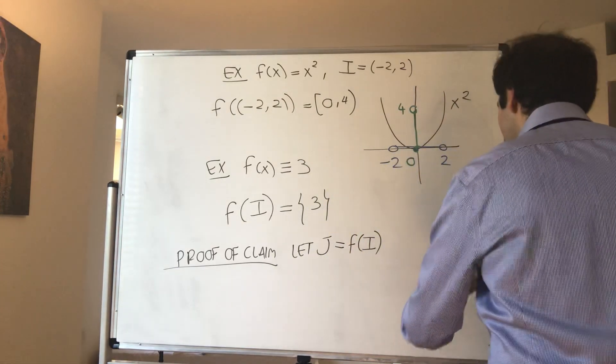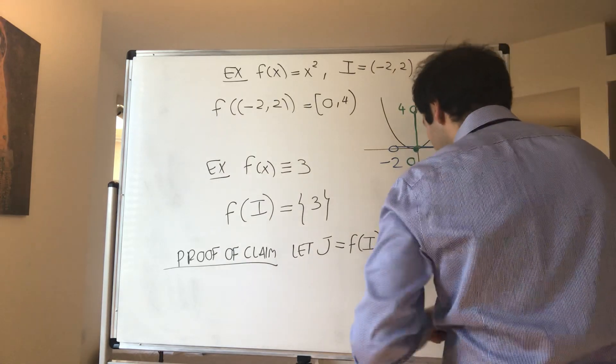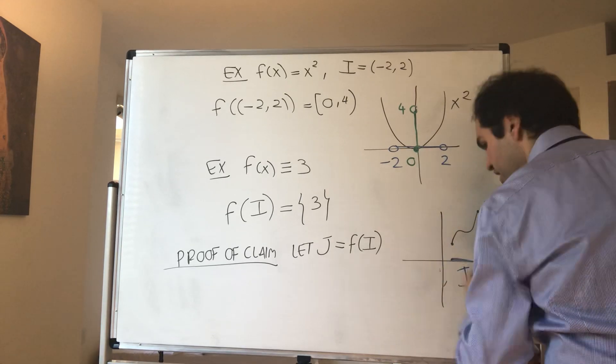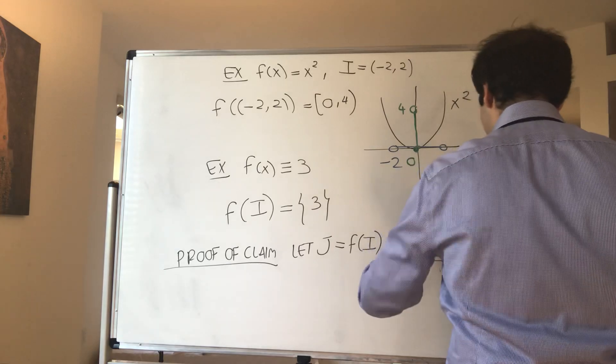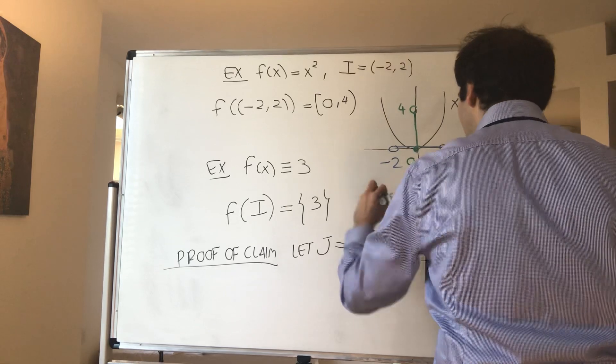So again, you have this function here f, this interval I, and the image we call it J, f of I, which is J.